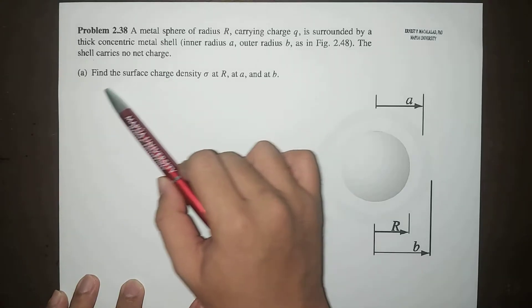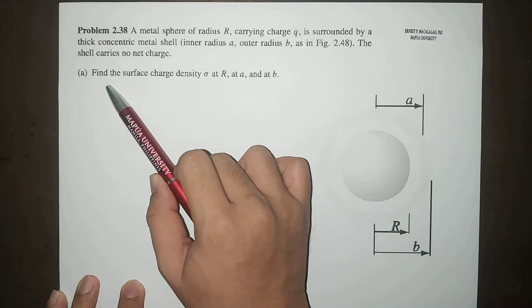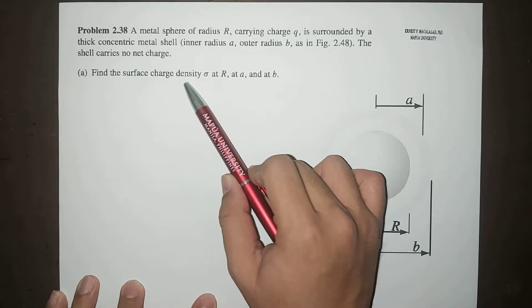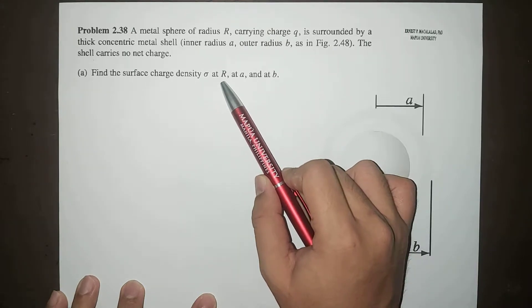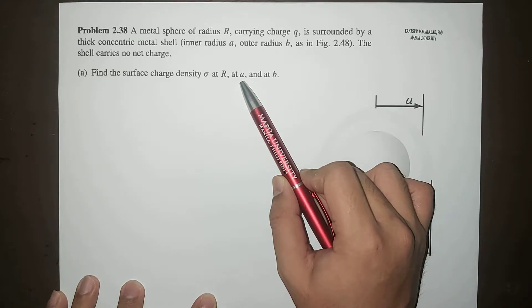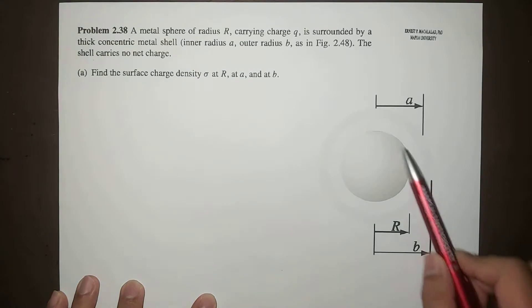In this video, we're going to solve part A, wherein we are asked to find the surface charge density sigma at radius R, at inner radius A, and at outer radius B.